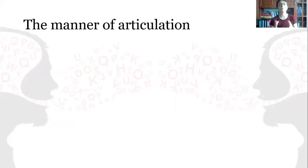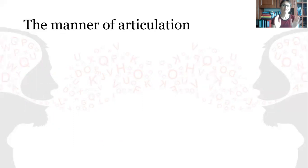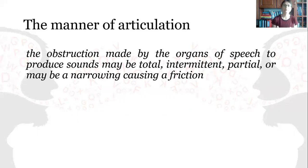Now what can be said about the manner of articulation? Here we are going to point to that particular obstruction which does not allow the airflow to pass unobstructedly through the vocal tract. The obstruction is made by the organs of speech to produce sounds, and this obstruction can be total, intermittent, partial, or a narrowing causing friction.